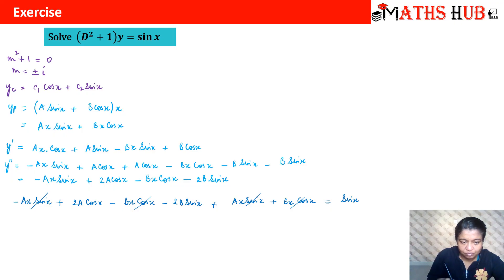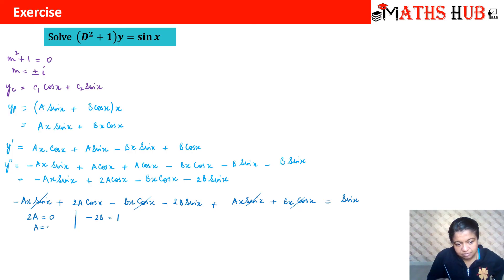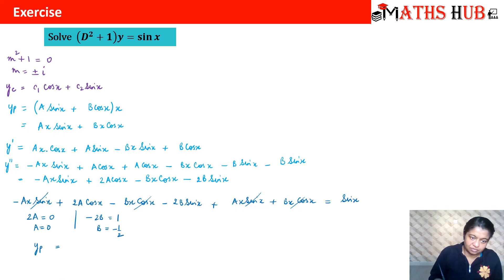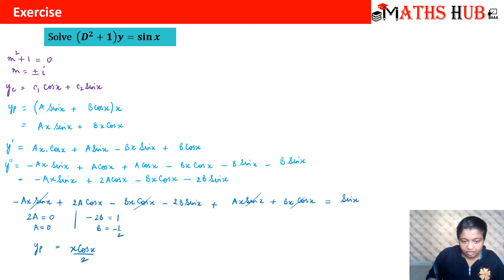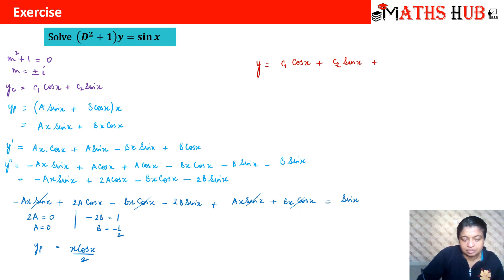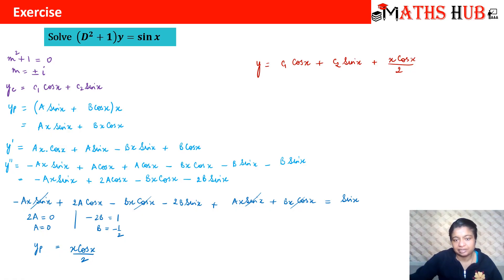Comparing coefficients: 2a = 0 gives a = 0, and −2b = 1 gives b = −1/2. So the particular solution is yp = −(x cos x)/2. The complete general solution is y = c1·cos x + c2·sin x − x·cos x / 2. That is our final answer.